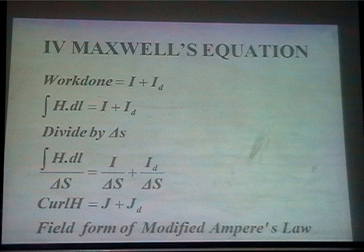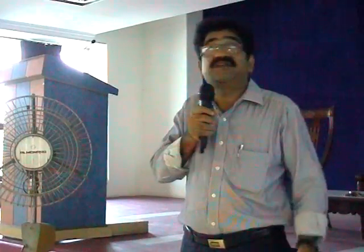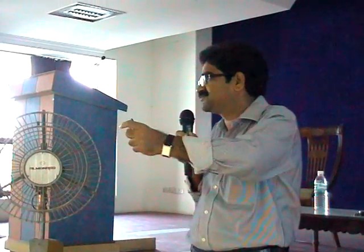Conduction current is due to free charges. Now take a capacitor, apply AC voltage, and connect an ammeter — what do you find? Take your fan capacitor: apply AC voltage, connect an ammeter, and you find some deflection. In a parallel-plate capacitor there are two plates with a dielectric or insulator between them, yet when I connect an ammeter it shows deflection.